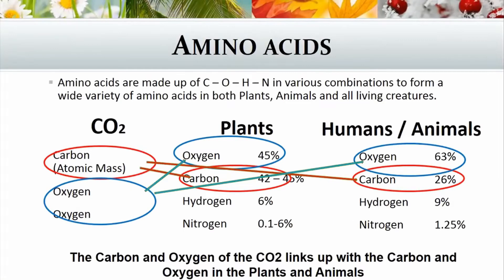They combine to form different amino acids, and then combinations in your body. When we have a look at the amino acid structure, we're looking at COHN — which is carbon, oxygen, hydrogen, nitrogen — and these combine to form your various amino acids and proteins in the body of the plants and animals. CO2 has carbon and oxygen, and the COHN in the plants is also carbon, oxygen, hydrogen, nitrogen — and for the animals as well. So there is your link, because the carbon in the CO2 is going to link up with the carbon in your plants and in the humans and animals, and the same with the oxygen.